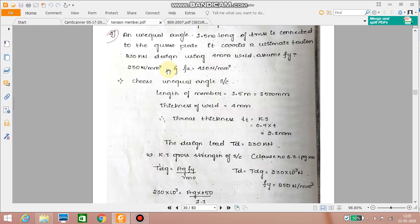Design using 4 mm weld. Assume Fy equal to 250 newton per millimeter square and Fu equal to 410 newton per millimeter square. So now let us try with an unequal angle section. You can go with the equal angle also.